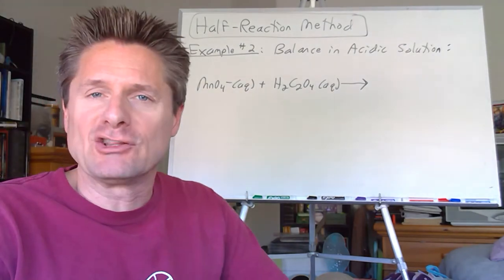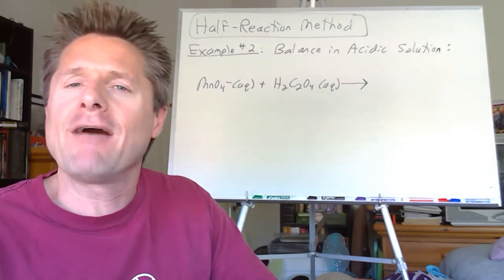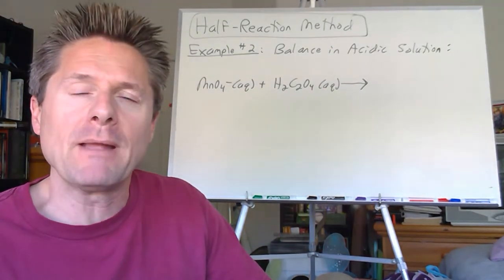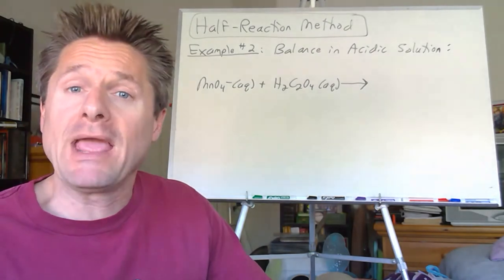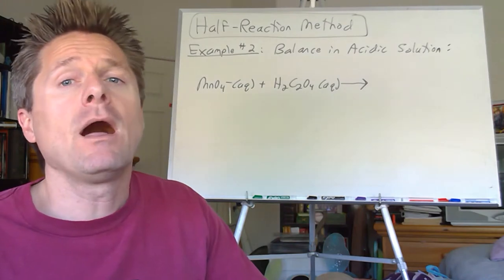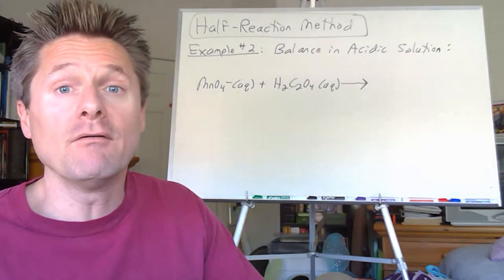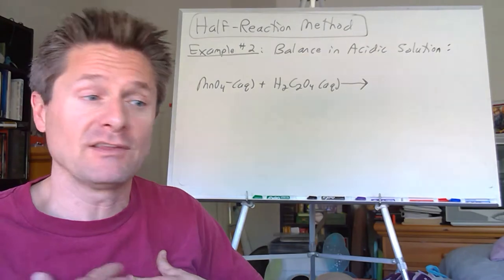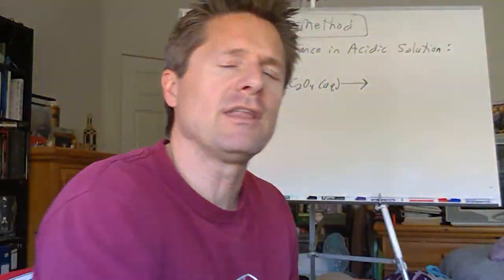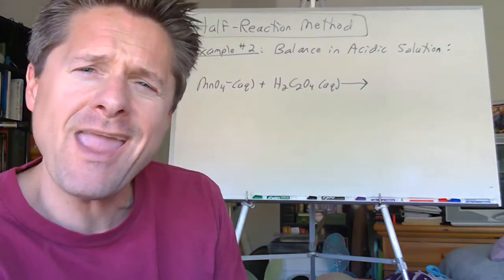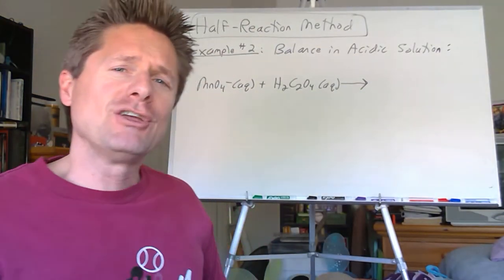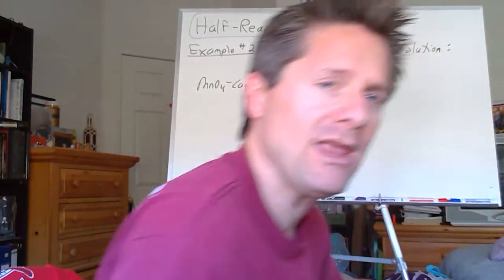Now let's do one in acidic solution. Regardless of the method you use or book you have, the basic solution process is pretty much the same for everybody — some people might mix the steps up a little bit. But in acidic solution, depending on where you're being taught, some may use H plus as an oversimplification of H3O plus. We're going to use H3O plus in this class because we introduced that in step five. So if you put H plus on your test, why is your H plus there? It's not done here — that means you're not following the steps your coach taught you.